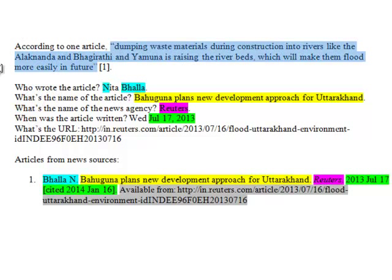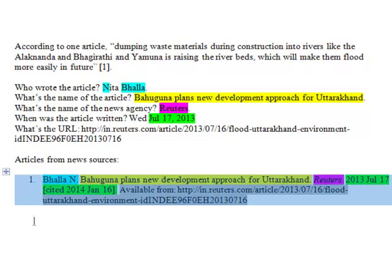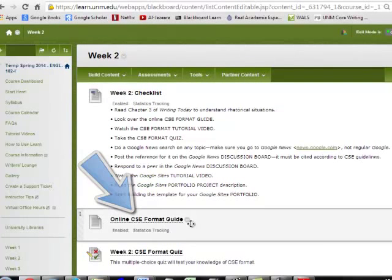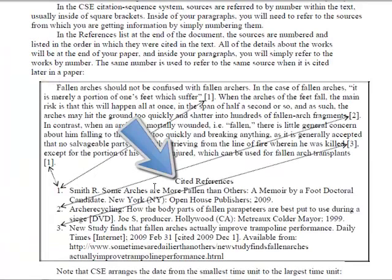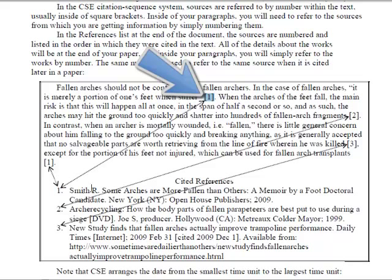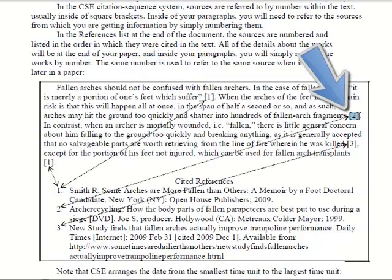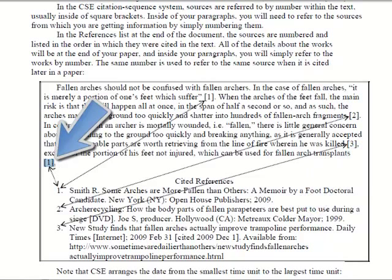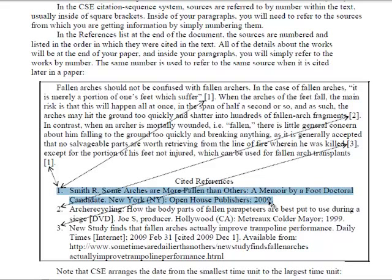Properly citing your quotation serves a number of purposes, but among the most important is the fact that your readers can verify where you got the information from and check it for themselves. On the online CSE format guide, you'll see a sample paragraph followed by a cited references section. Since I'm citing this source first it's called 1, the second is 2, the third is 3. Notice also that if I go back and cite source 1 a second time, it's still source 1 — it doesn't become source 4, 5, or 6. As long as the information is the same, you can keep repeating that 1 throughout your paper.